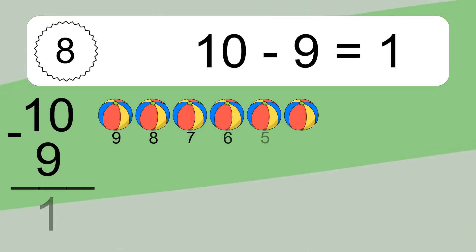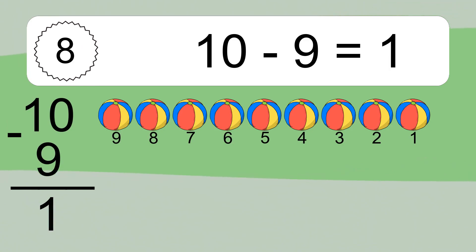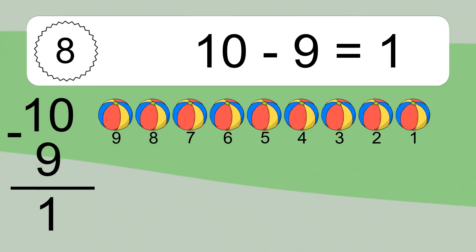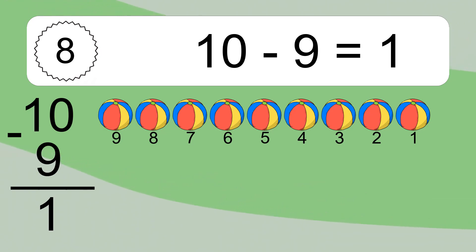10 minus 9 equals what? 10 minus 9 equals 1. Let's count it: 9, 8, 7, 6, 5, 4, 3, 2, 1.